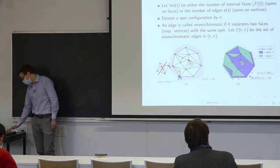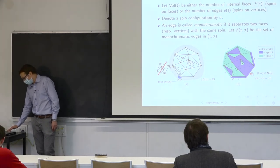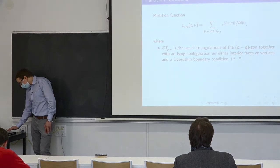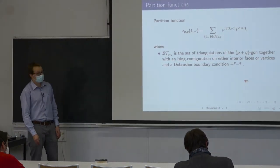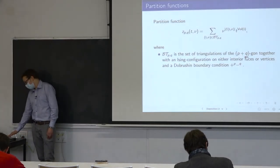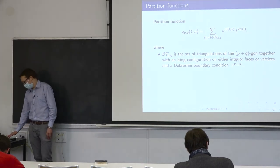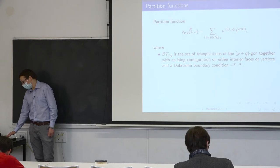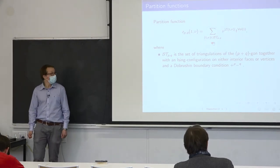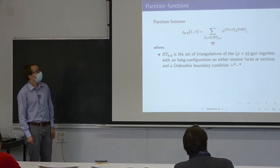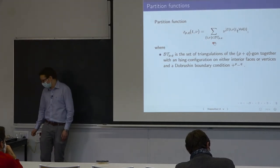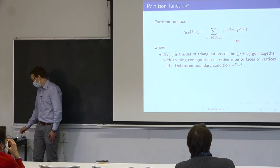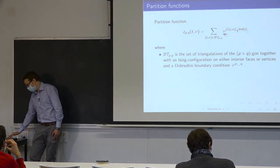On the left is a triangulation of a polygon without an Ising configuration, where the boundary must be simple; it's rooted at corner row and has exactly 19 faces. On the right is the same triangulation decorated with an Ising model on the faces, with exactly 18 monochromatic edges — note the boundary condition.